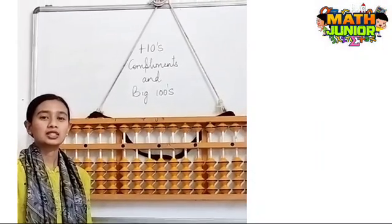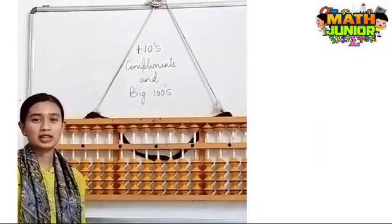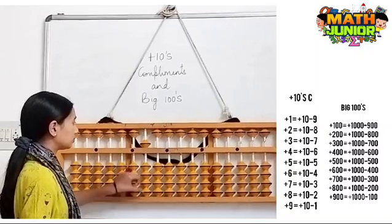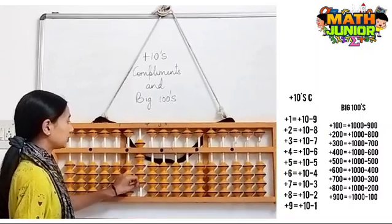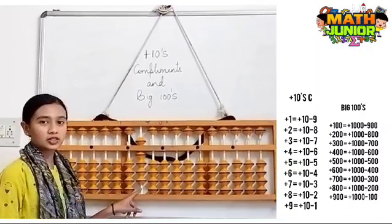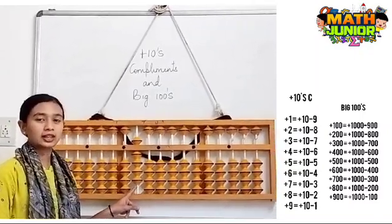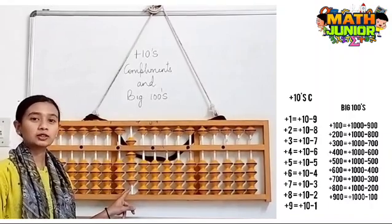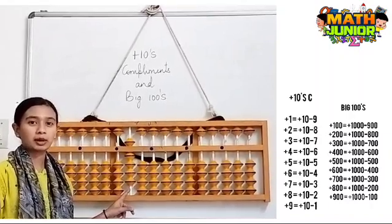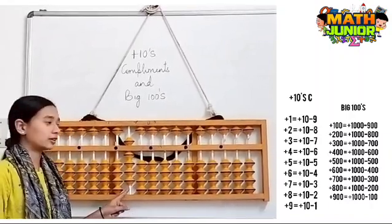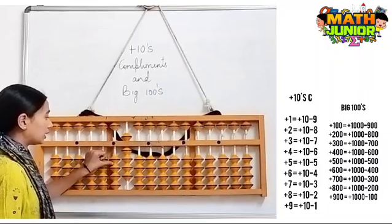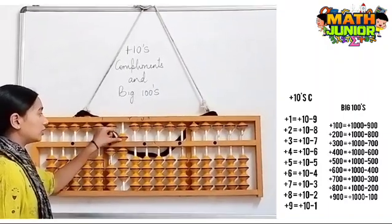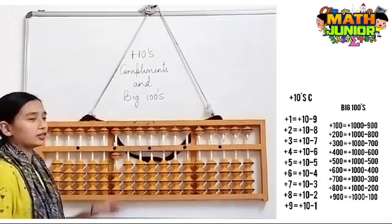Now let's learn plus 10's complement formulas and its big 100's. In the 100's lot, I have 900 here and I need to add 100. So the formula for plus 100 is plus 1000 minus 900. In the 1000's lot, I will add 1000 and remove 900.